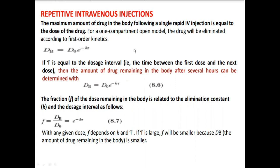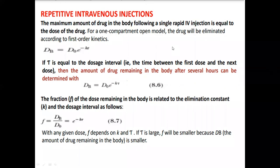The maximum amount of the drug present in the body following a single rapid intravenous injection is equal to the dose of the drug. Whatever dose you give through the IV route, that equals the maximum amount in the body. It follows first-order kinetics: DB = D0 · e^(−kT), where DB is the drug in the body, D0 is the initial drug concentration, k is the elimination rate constant, and T is the time interval.